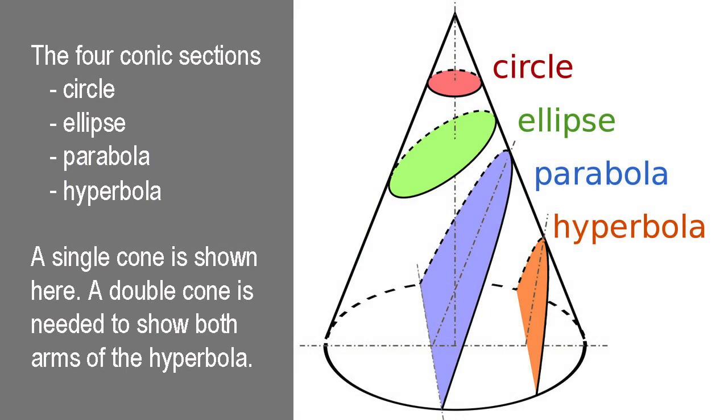The conic sections are an important, familiar, and ubiquitous family of curves obtained by slicing with a plane a right circular double cone extended indefinitely in both directions. Depending on the angle of the slice to the axis of the cone, the resulting curve may be a circle, an ellipse, a parabola, or a hyperbola.